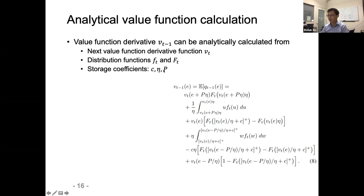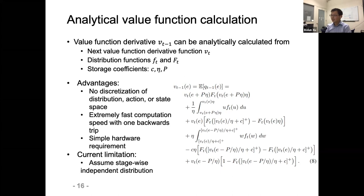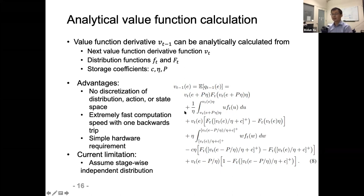Although this function looks complicated, it is actually very simple to calculate on most software or hardware platforms. The advantages are: no discretization of anything — especially no discretization of the distribution — we can handle distribution functions directly in analytical form or use samples; extremely fast computation with a single backward pass from the last time period; and very simple hardware or software requirements.